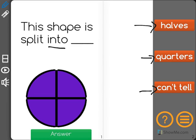So I'm going to look at the shape and I see that I have a circle here. Now what I'm going to do is I'm going to count how many equal pieces it is split into.